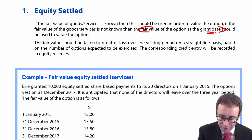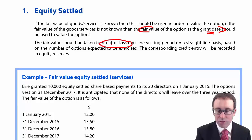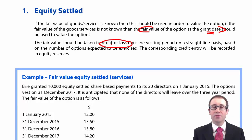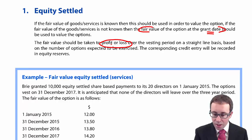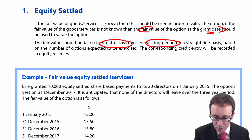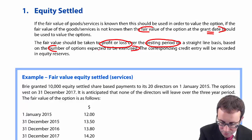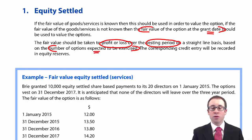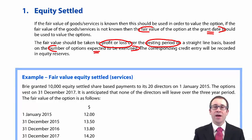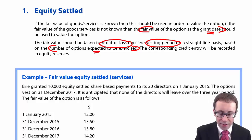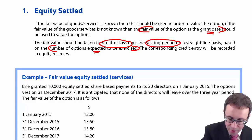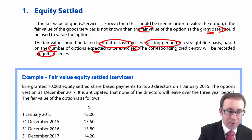You take that fair value to profit or loss as an expense, to recognise the expense for the benefit we receive by the employee working for us. We take that over the vesting period, based upon the number of options that we expect to be exercised. There is a little bit of judgement there — estimating the number of people who we think will be there at the end of the vesting period. Don't forget we have a corresponding credit entry within equity.